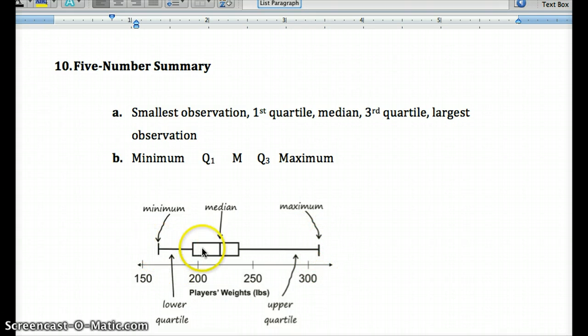So this means one quarter of my data is located here. One quarter of my data is located between Q1 and the median. One quarter of my data is between median and Q3. And one quarter of my data is between Q3 and the maximum. So this five-number summary corresponds to a box plot, which is what we call this graph here.